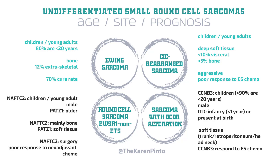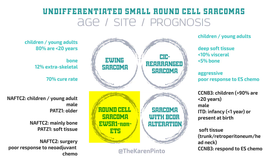That's the roundup of the four classes of small round cell sarcomas that in the past would have gone under the rubric of Ewing sarcoma: classic Ewing's, CIC-rearranged, BCOR alteration, and the non-ETS fusion cases. Thanks to Karen Pinto for allowing use of these beautiful infograms. I'll leave you with an infogram comparing the age, site, and prognosis of these four groups of round cell sarcomas.